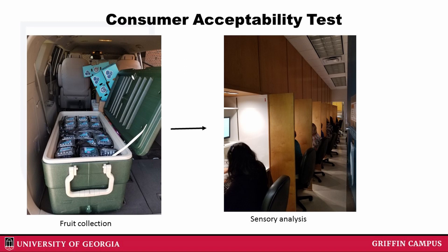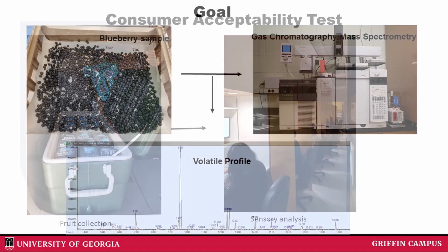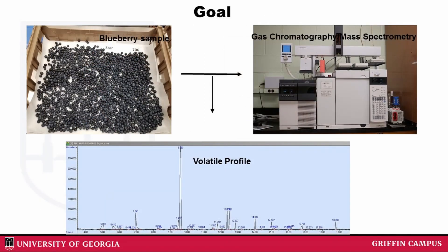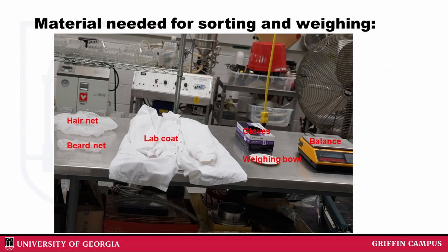We need to survey the germplasms to understand variations present and what volatiles to target during fruit breeding. Our goal today is to illustrate how volatile compounds in blueberries are sampled using gas chromatography coupled with a mass spectrometry detector. The entire process of identifying volatile compounds starts right after harvest. These are some of the materials that will be needed for sorting and weighing of berries.